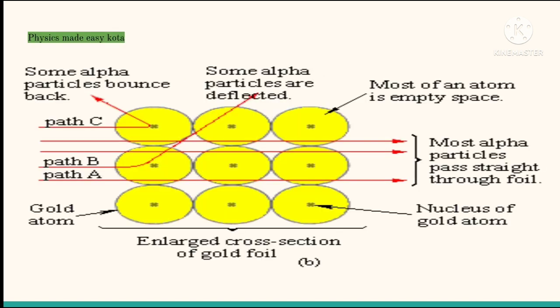Rutherford and his associates made the following observations from the scattering experiment. The first one, that most of the alpha particles pass through the gold foil undeflected. It is shown by the path A. It means that most of an atom is empty space.